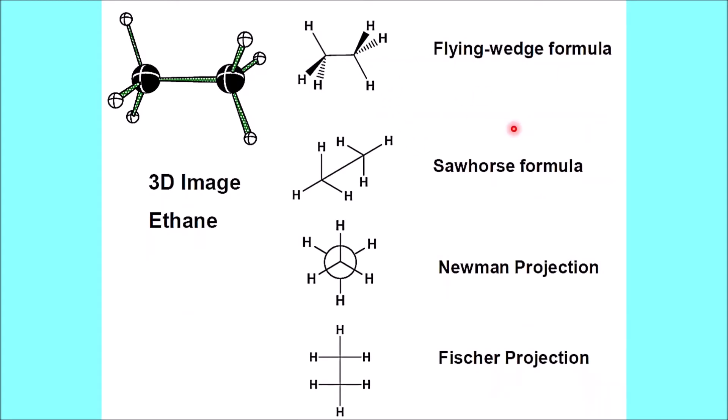Basically there are four projection formulas: the flying wedge formula or wedge-dash formula, sawhorse formula, Newman projection formula, and Fischer projection formula. There is one more projection formula called the Haworth projection formula, which is mostly used for monosaccharides and polysaccharides in carbohydrates — we will study that in the carbohydrates chapter. Now let us understand these projection formulas one by one.